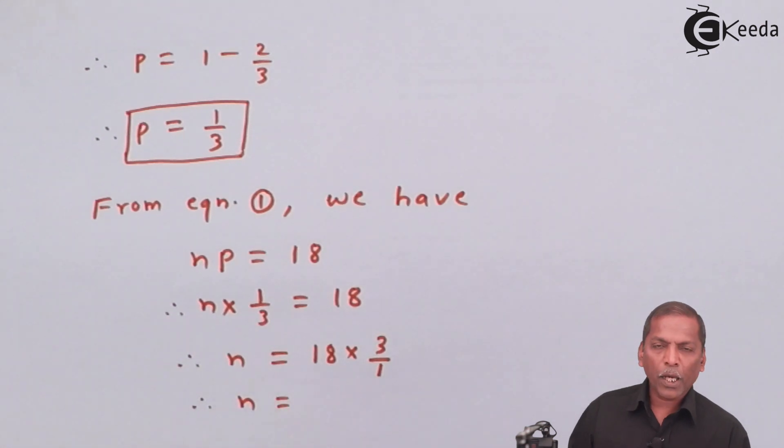Therefore, n is equal to 18 into 3. That gives 54.